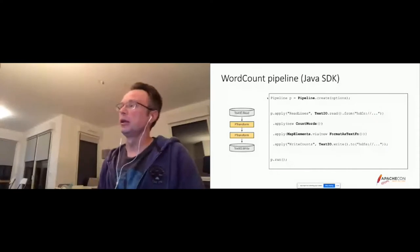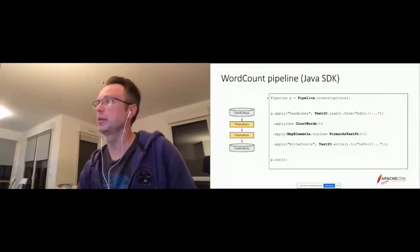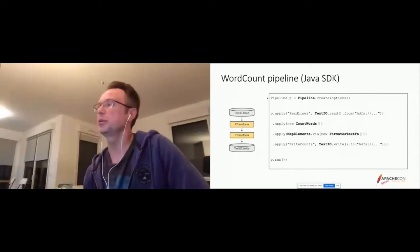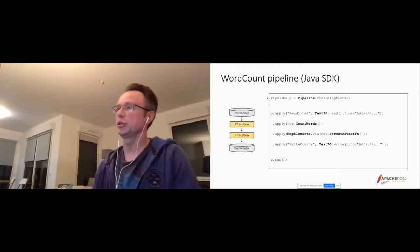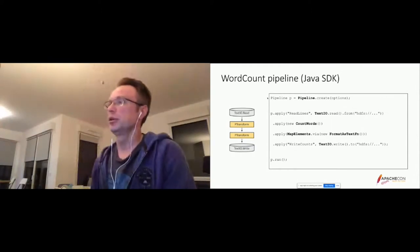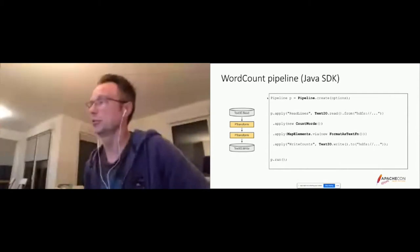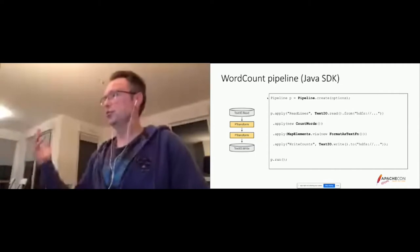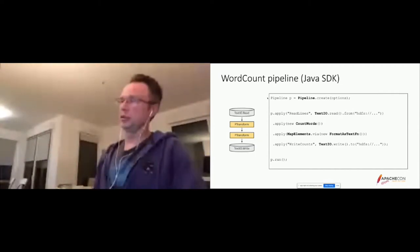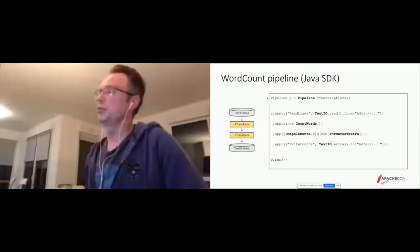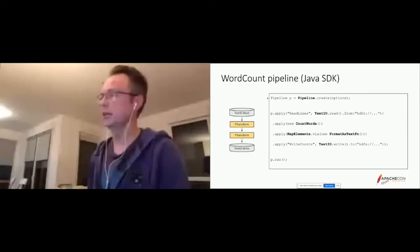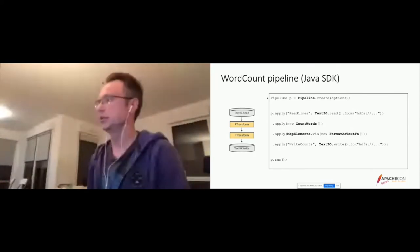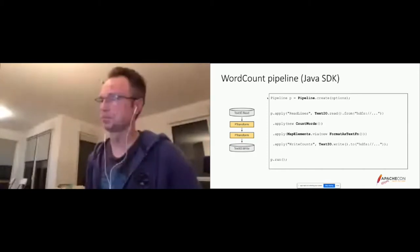An example of what a Beam pipeline looks like: this is a WordCount example using the Java SDK. We create a pipeline and use the apply method to apply Beam transforms over collections. We use TextIO to read data from a file system, then call a custom transform called CountWords to count words, process the output to make it user-friendly, and finally write the data back to the file system with TextIO. Pretty easy.